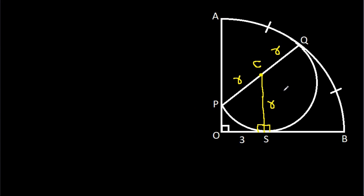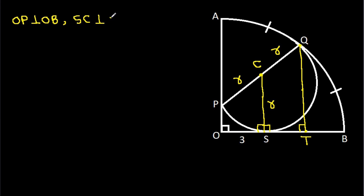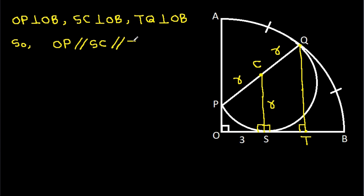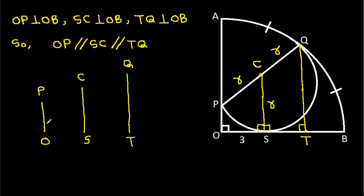Now, from point Q, if we make a perpendicular on OB, suppose this point is T. Then OP is perpendicular to OB, SC is perpendicular to OB, and TQ is perpendicular to OB. So OP, SC, and TQ are all parallel to each other.